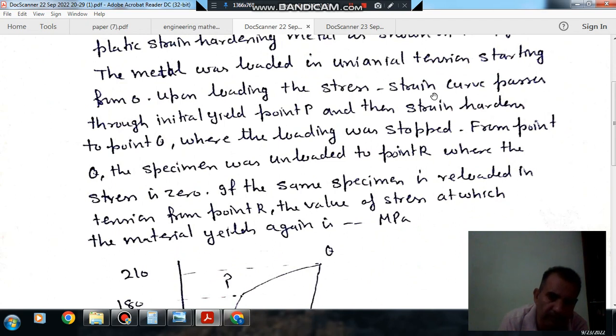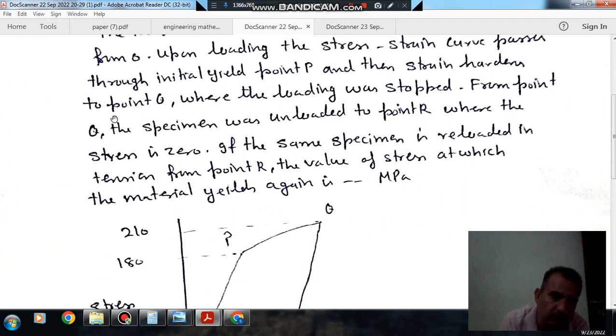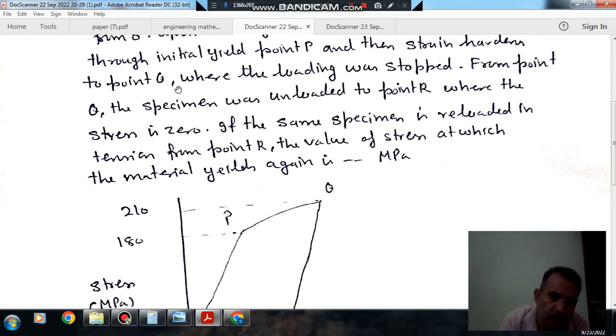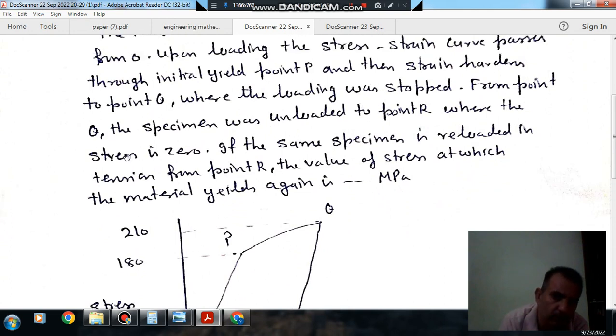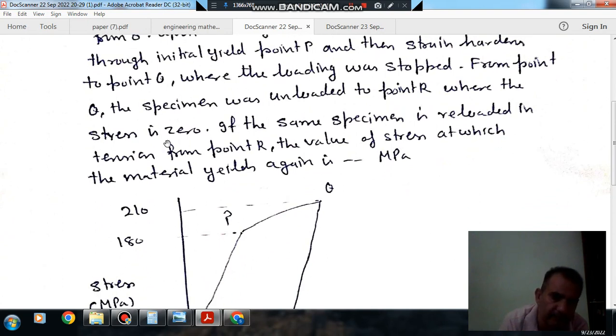Upon loading, the stress-strain curve passes through initial yield point P and then strain hardens to point Q, where loading was stopped. From point Q, the specimen was unloaded to point R, where the stress is zero.